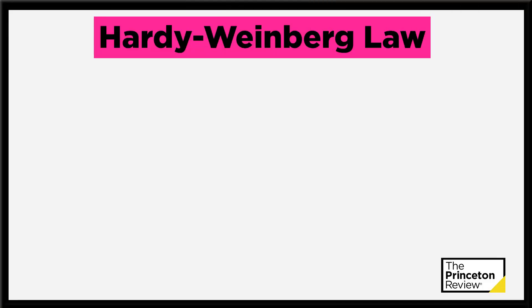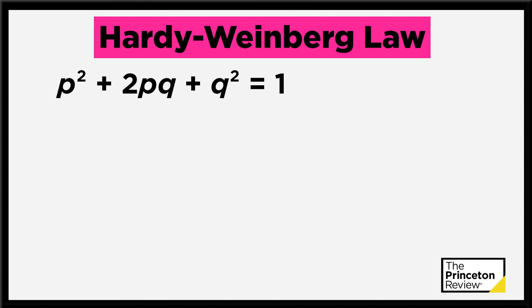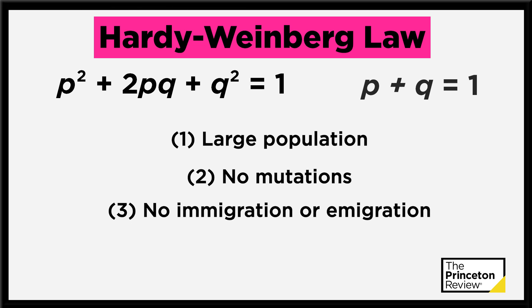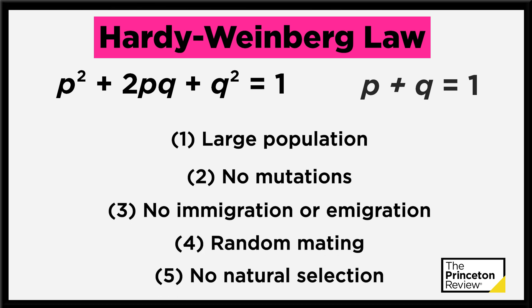Finally, you need to understand the all-important Hardy-Weinberg law, which states that a population will be in genetic equilibrium and can be described by the equations p² + 2pq + q² = 1, and p + q = 1 — but only if it meets five conditions: number one, a large population; number two, no mutations; number three, no immigration or emigration; number four, random mating; and number five, no natural selection.